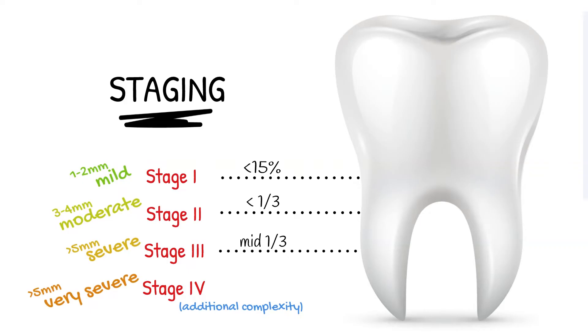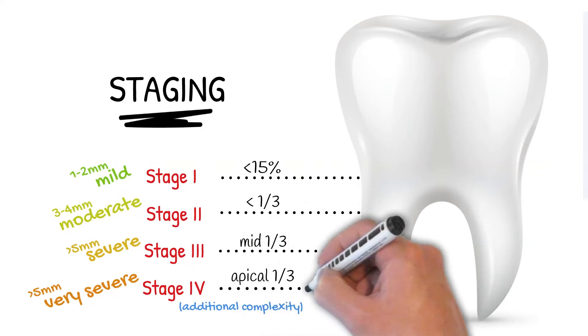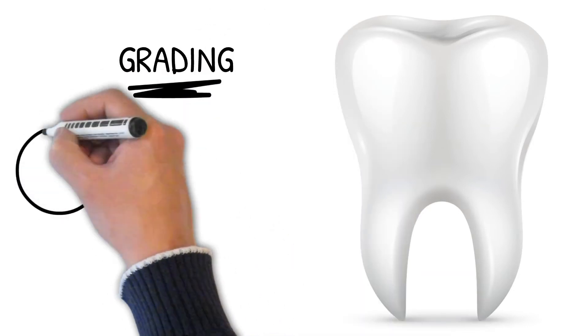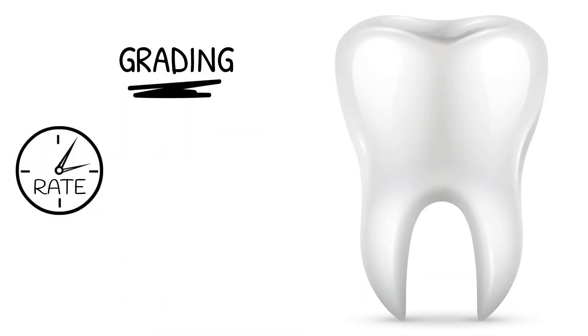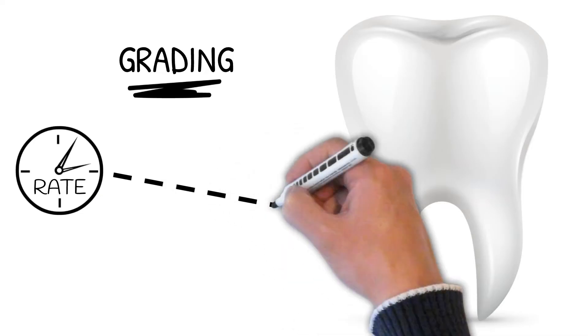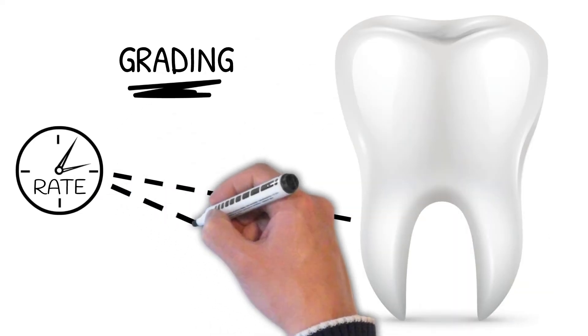The second component is grading. This represents the rate of bone loss that has already taken place. Grade A is a slower rate, grade B is moderate, and grade C is a rapid rate.